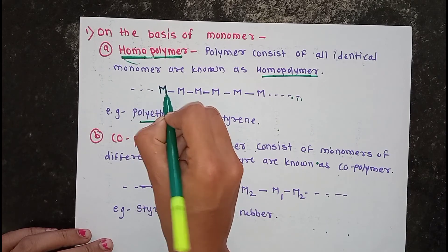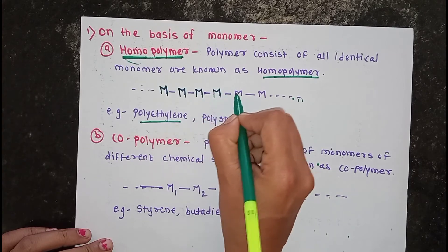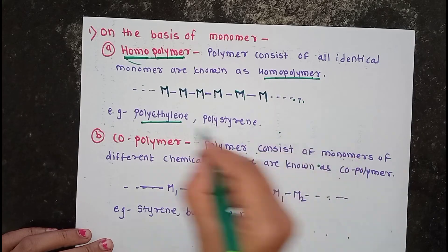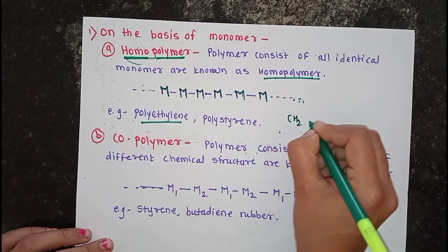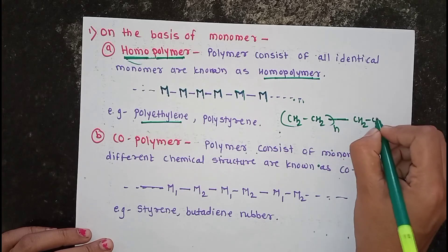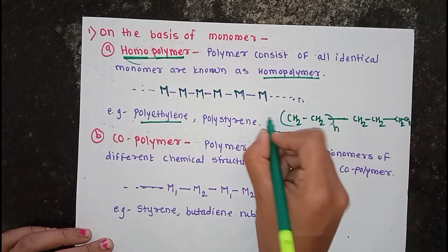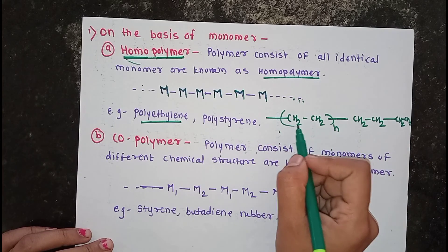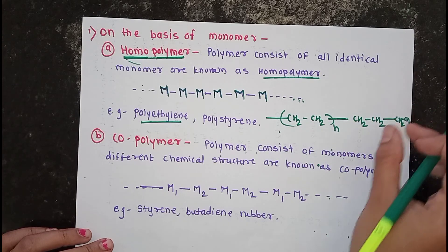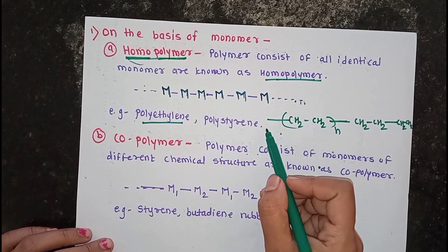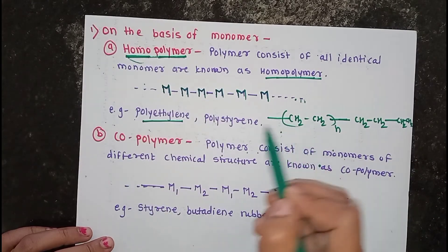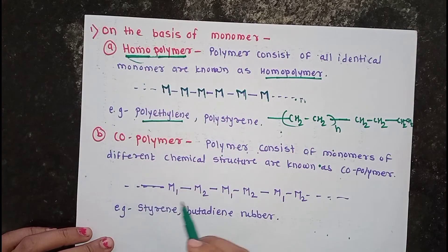In polyethylene, the CH₂-CH₂ monomer unit is repeated regularly throughout the polymer structure. Since the same monomer unit is repeated, polyethylene is a homopolymer. Another example of a homopolymer is polystyrene.